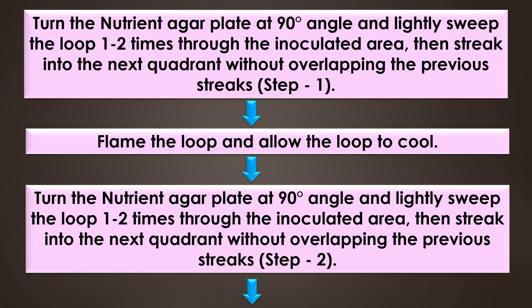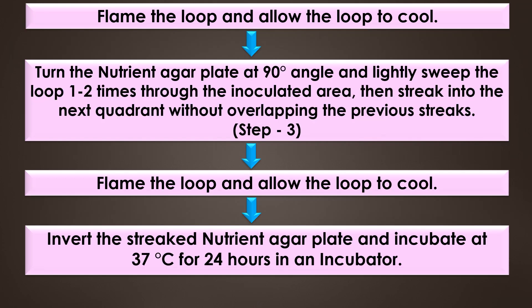After step two, flame the loop and allow it to cool. Turn the nutrient agar plate at 90 degrees and lightly sweep the loop one to two times through the inoculated area, then streak into the next quadrant without overlapping the previous streak. This is step three. After step three, flame the loop and allow it to cool. Finally, invert the streaked nutrient agar plate and incubate at 37 degrees Celsius for 24 hours in an incubator.